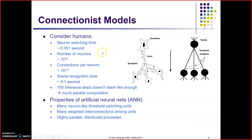What are the connection model? In humans, the neuron switching time is about 0.001 seconds and the number of neurons is approximately 10 raised to power 10. Connections per neuron are 10 raised to power 4 or 10 raised to power 5. Scene recognition time is 0.1 seconds. 100 inference steps doesn't seem like enough — much parallel computation. Properties of artificial neural networks: many neurons like threshold switching units, many weighted interconnections, highly parallel distributed process.